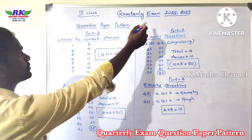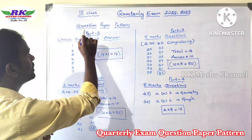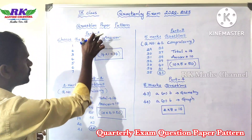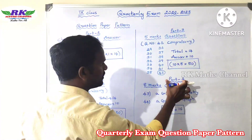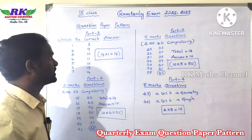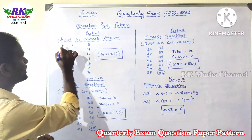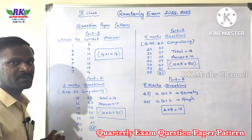Let's see the first pattern. Quarterly exam 2022-23 question paper pattern. There are 4 parts: Part 1, Part 2, Part 3 and Part 4. Total 4 parts. Part 1 is choose the correct answer — that means, in the book back, every lesson there are bits.